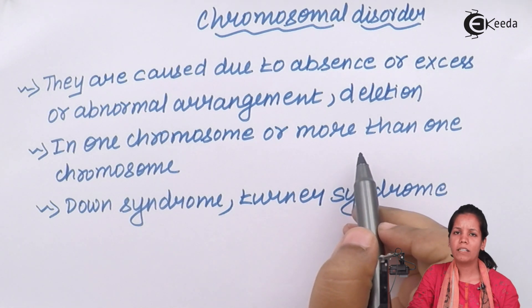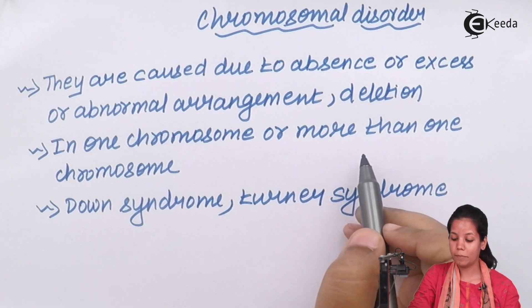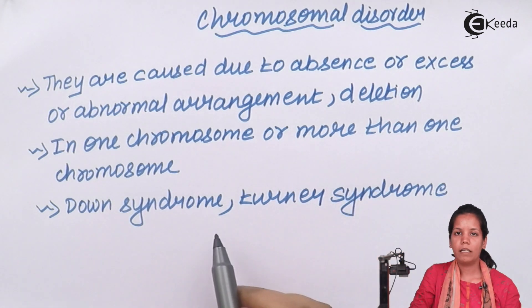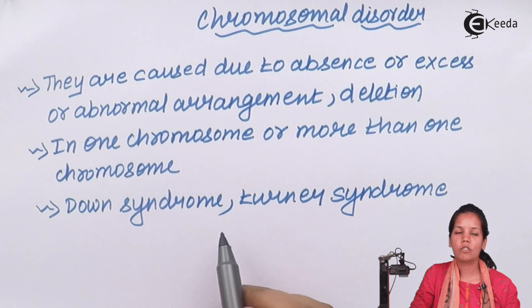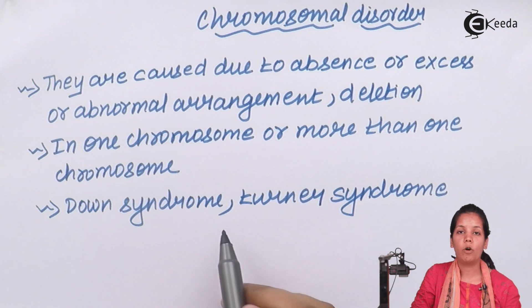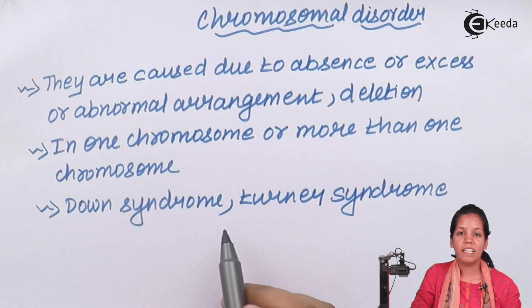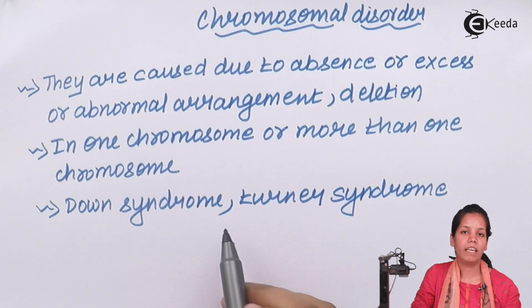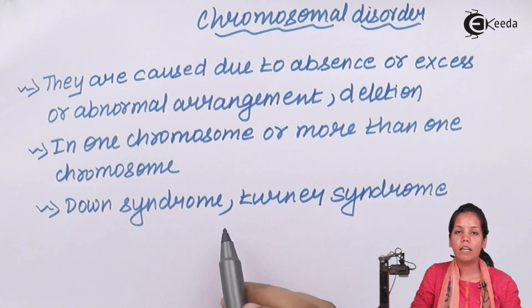Once a chromosomal disorder occurs, it is difficult to treat since there is a change in your chromosomes which cannot be replenished back. We all know there are 46 chromosomes in the human body — in a single cell — and they are all very crucial, vital, and have specific functions.